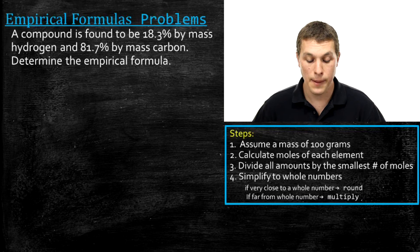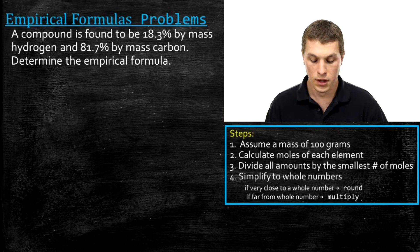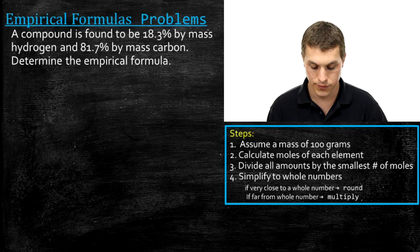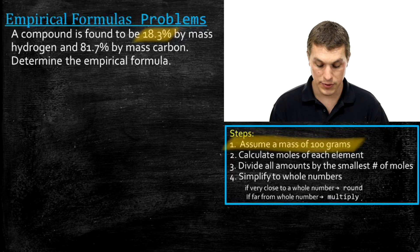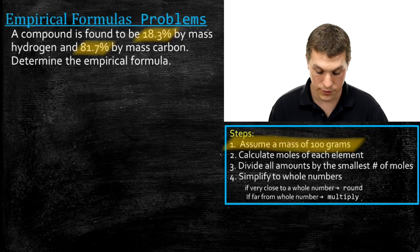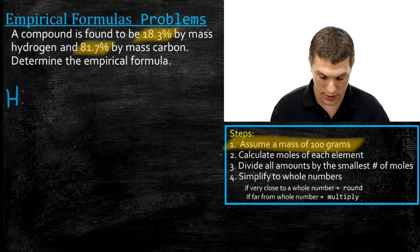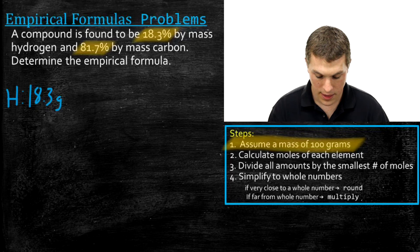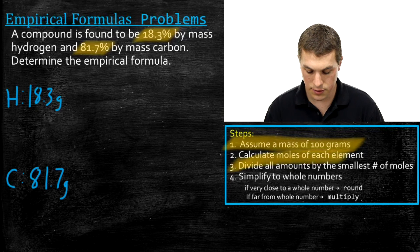Let's do a second example. A compound is found to be 18.3% hydrogen by mass and 81.7% carbon by mass. We're asked to determine the empirical formula. Step one: assume we have 100 grams, so we have 18.3 grams of hydrogen and 81.7 grams of carbon. Step two: calculate the moles of each element.